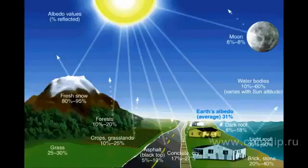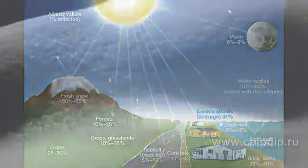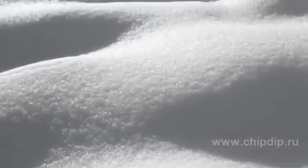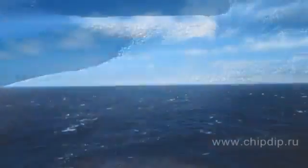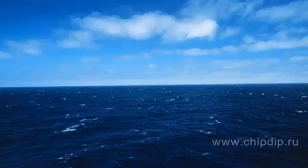The highest values have clouds and snow — 0.9 — meaning that up to 90% of radiation is scattered. Therefore, snow melts slowly even in bright sunlight. In contrast, albedo of water and black earth is very low, about 0.05. These are heat-absorbent surfaces.